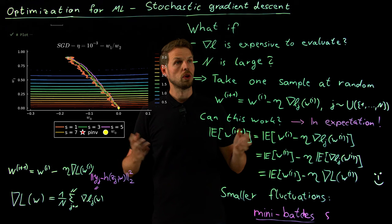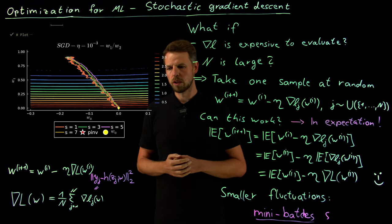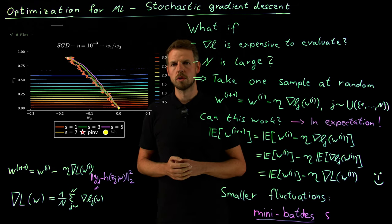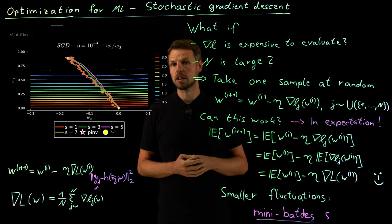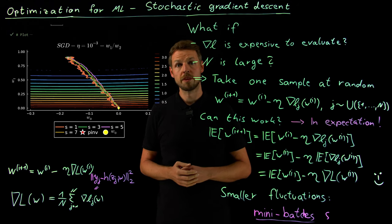And so this concludes our part on optimization without constraints and we are going to discover a little bit more in the next videos how we can also deal with constraint optimization problems which can be very important if we consider in particular physical constraints or maybe constraints about sizes of the parameters and so on. Thank you.